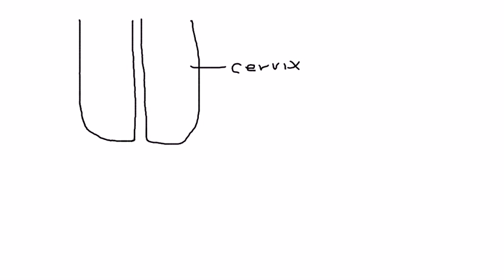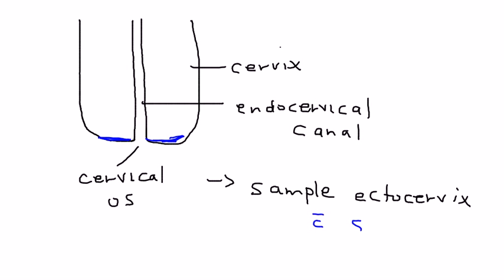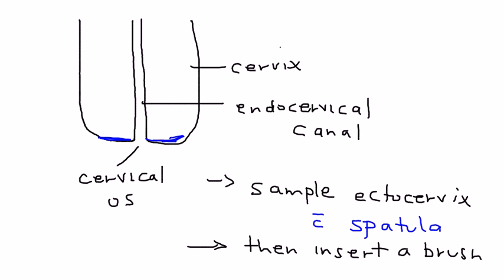Now let's review some anatomy to explain how the technique is done. The cervix has an opening called the cervical os, and the canal inside is known as the endocervical canal. When doing a pap smear, the first thing you do is sample cells from the ectocervix using a spatula. Then you insert a small brush into the canal to sample the endocervix.